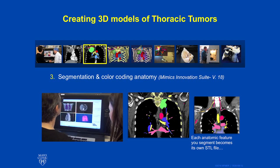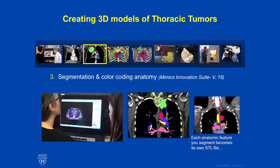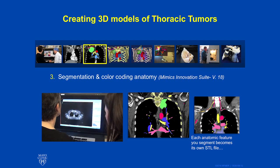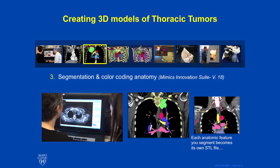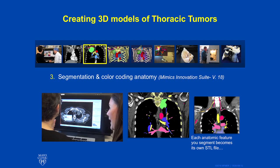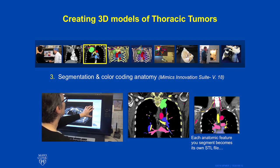Thresholding is when you actually pick a certain Hounsfield value and then clean that image up. There are a dozen different tools you can use to segment different structures. Thresholding is one. Another is Region Grow. Region Grow highlights contiguous structures and allows you to select something such as air, and everywhere that air connects is highlighted, as seen in the image on the far bottom left.